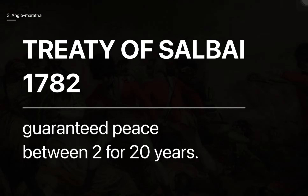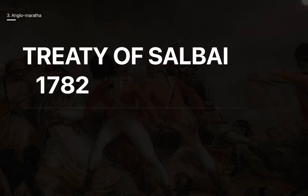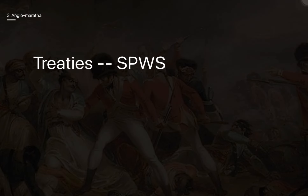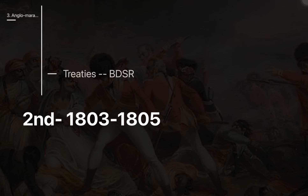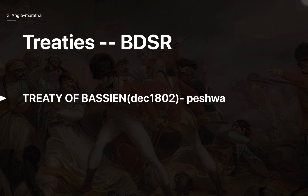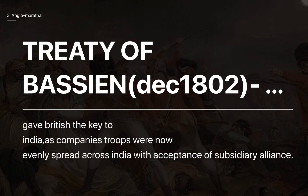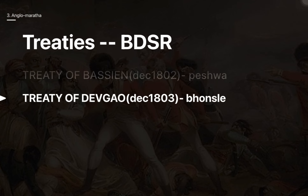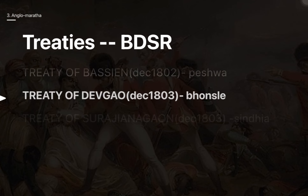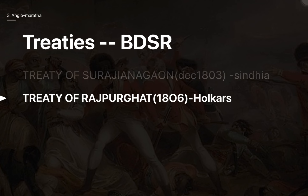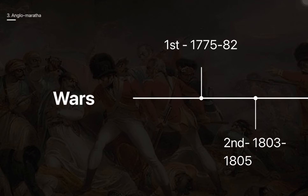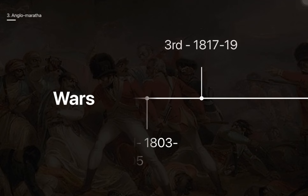The Second Anglo-Maratha War lasted from 1803 to 1805. To remember its treaties, use the mnemonic BDSR: Treaty of Bassein, where a terrified Bajirao II fled to Bassein and accepted a subsidiary alliance; Treaty of Devgaon with the Bhonsle; Treaty of Surji-Anjangaon with Sindhia; and Treaty of Rajpurghat with the Holkars.